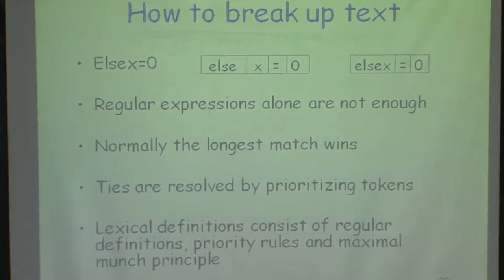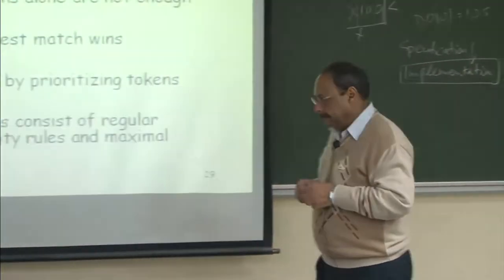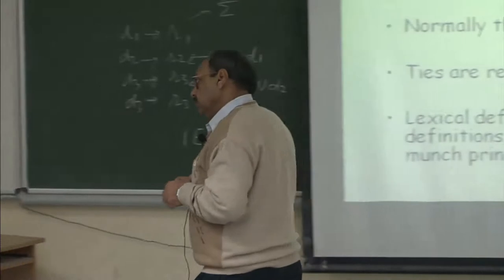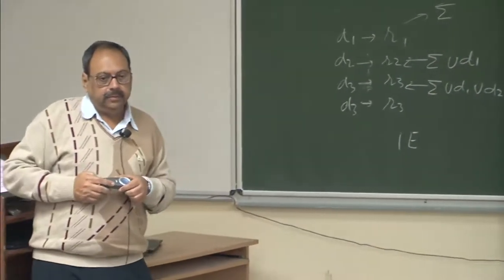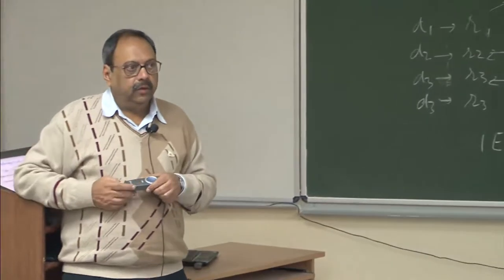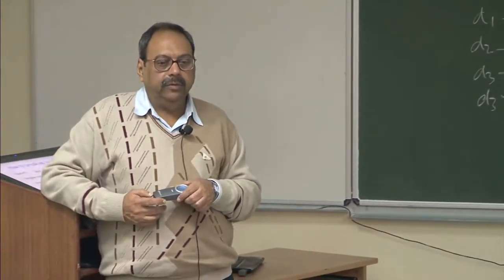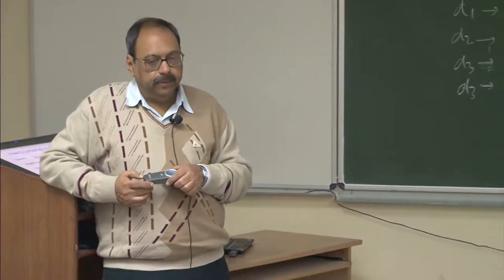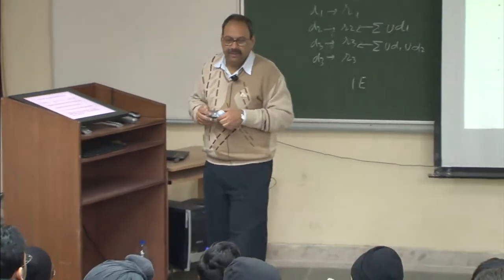A question was raised: will the maximal munch principle be used for C-like languages? For C-like languages, you may just need to consider word boundaries defined by certain characters. Only in C you have to worry about something like '>>': if I don't use maximal munch, how do I break it? The key point is that word boundary specification is implicit — it is part of your implementation decisions, not explicitly stated in the regular definitions themselves.